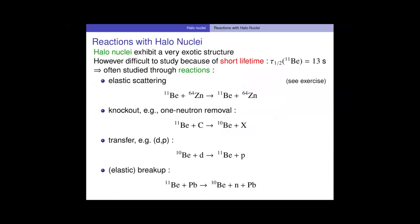The problem is, when you want to study these nuclei, they are quite short-lived. Beryllium-11 has a half-life of about 13 seconds, which is quite short. And Beryllium-10 is down by three orders of magnitude — it's around 10 milliseconds. So the closer you get to the drip line, the shorter the half-life is. It's very hard.